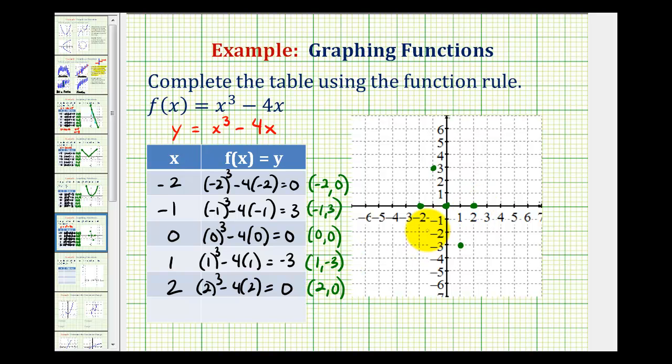And this should be enough information to graph this function. It's going to pass through these five points. Looking our way from left to right, the graph is going to start down here, pass through the x-axis, reach a high point, turn, pass through the origin, reach a low point here, turn, and pass through the x-axis again. So the graph will look something like this.